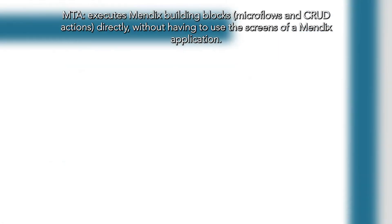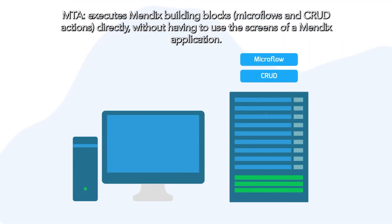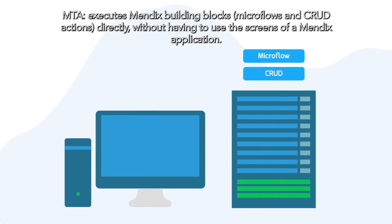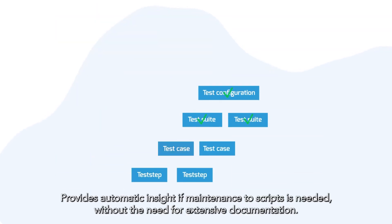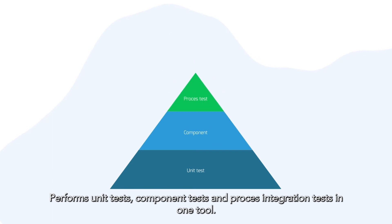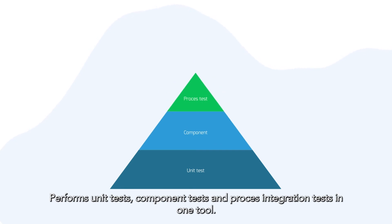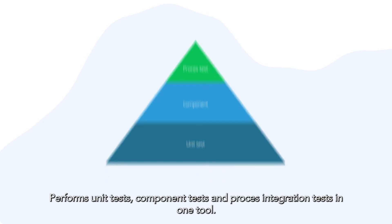MTA executes Mendix building blocks, microflows, and CRUD actions directly without having to use the screens of a Mendix application. It provides automatic insight if maintenance to scripts is needed without the need for extensive documentation. It performs unit tests, component tests, and process integration tests in one tool.